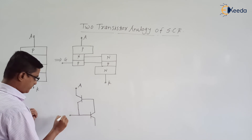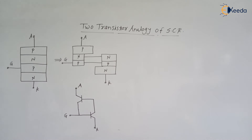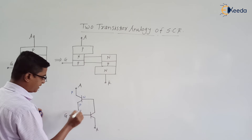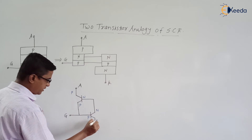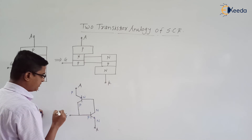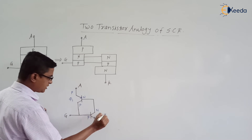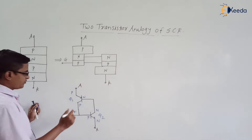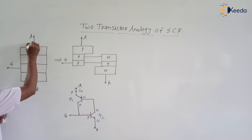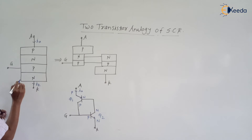This is the anode, gate and cathode. So this one is the PNP transistor and this is the NPN transistor — PNP and NPN transistor. Suppose this is transistor Q1 and this is transistor Q2. The current here is IA, that is the current flowing through the SCR. Current flowing through the cathode is IK, current flowing through the gate is IG.